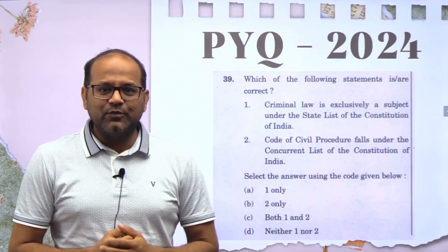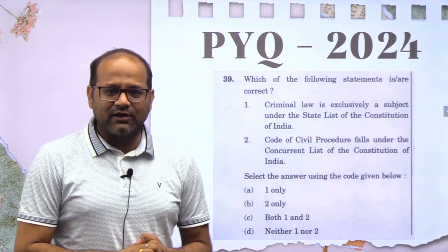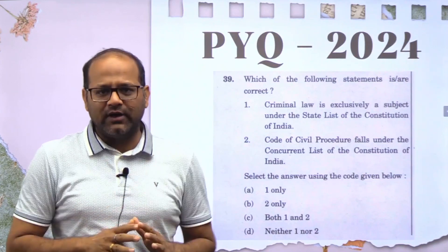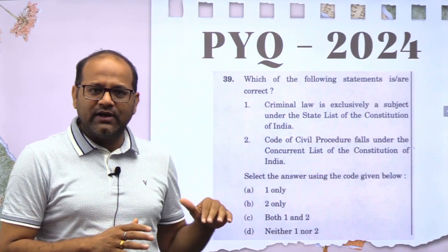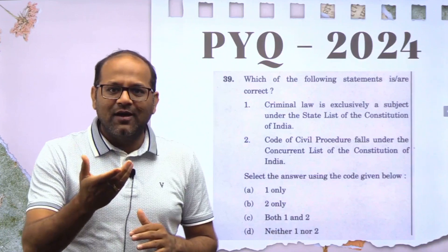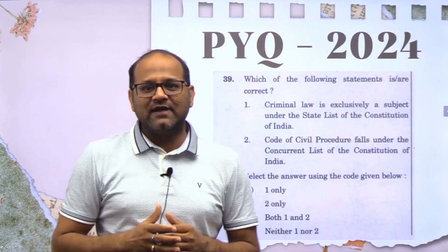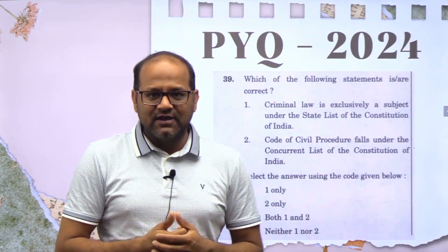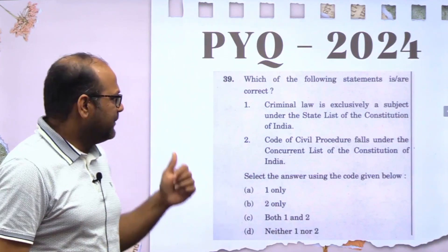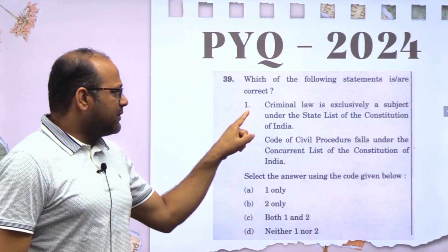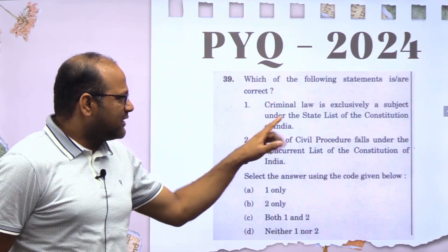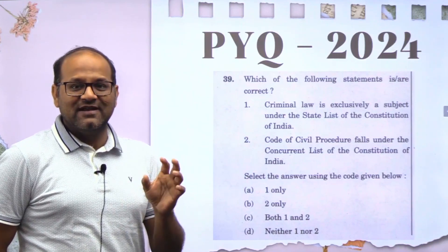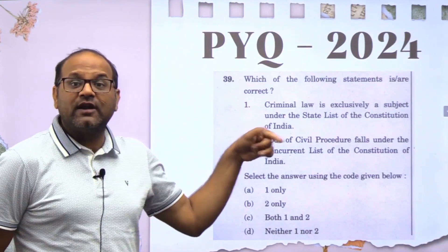So the changes in the criminal law amendments — how they were interpreted by UPSC for the prelims exam — we will see with the help of a question. This was the question asked by UPSC in the recent CDS exam conducted on 1st September 2024. The question asks: 'Criminal law is exclusively a subject under the state list of the Constitution.' So the question is about which list — state list or concurrent list — criminal law falls under.